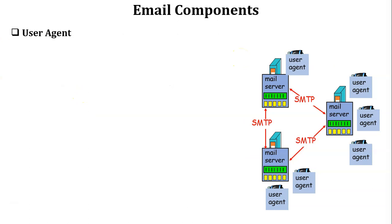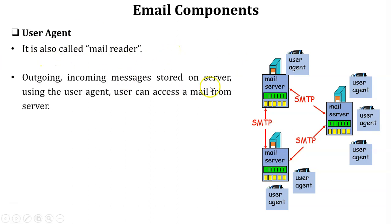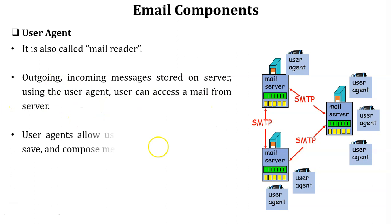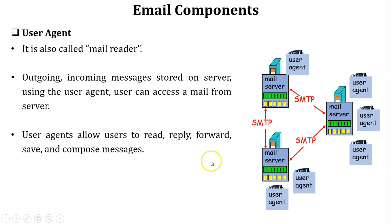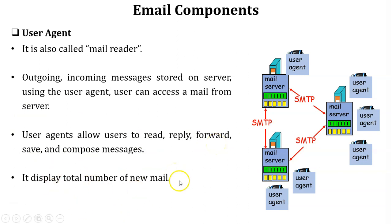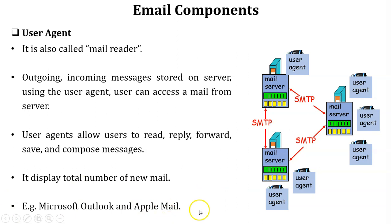The first component is the user agent, also called the mail reader. All outgoing and incoming mails are stored on the server, and using the user agent a user can access and read mail from the server. Using the user agent, a user can read, reply, forward, save, and compose mail. The user agent also lets users know the total number of new mails in their mailbox. Examples of user agents are Microsoft Outlook and Apple Mail.